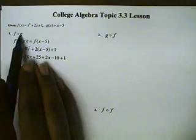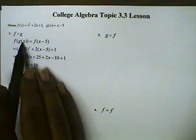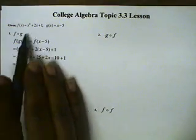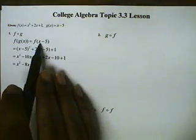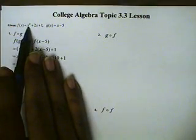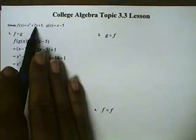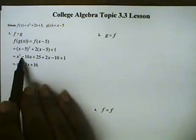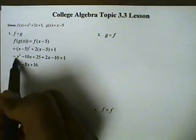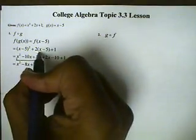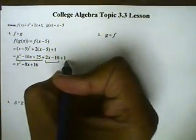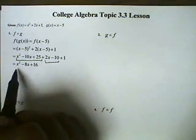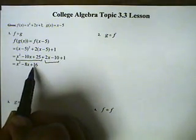We've already done a composite of f and g. f composed with g means that g is the inner function. g being the inner function means that x minus 5 is the inner function. So everywhere we see x, we're going to substitute it with x minus 5. So this becomes x minus 5 squared, this becomes 2 times x minus 5, and then plus 1. We use binomial expansion on x minus 5 to get x squared minus 10x plus 25. Then we use distributive property to get 2x minus 10, and then the plus 1. We collect like terms and we get x squared minus 8x plus 16.